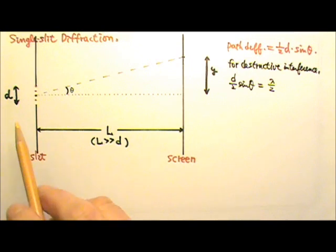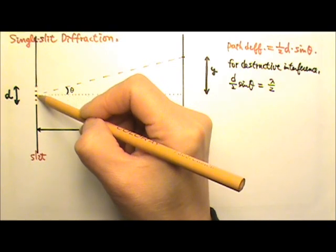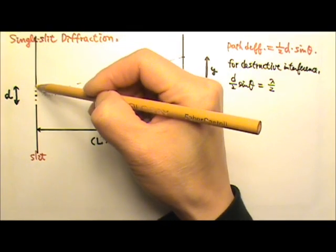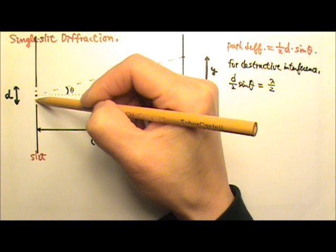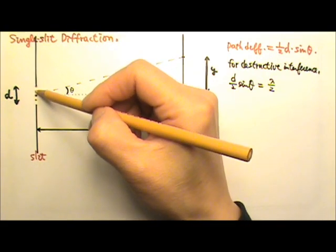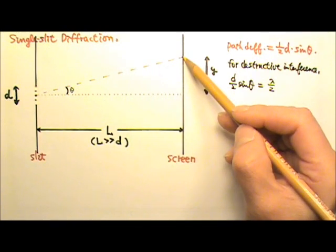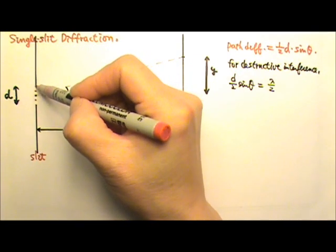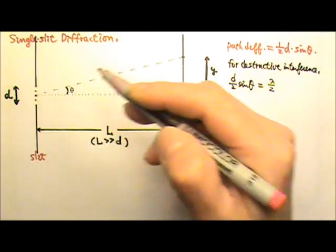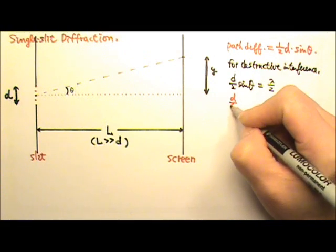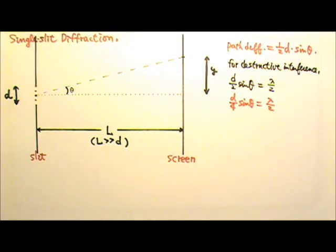For the next dark fringe, we divide all the point wave sources into four groups. If the first pair gives us destructive interference, the second pair will also give destructive interference, meaning all wave points give us destructive interference and we get a dark fringe on the screen. In that case, the distance between the paired wave sources is one-fourth D, so the condition becomes (D/4) sine theta equals half lambda.